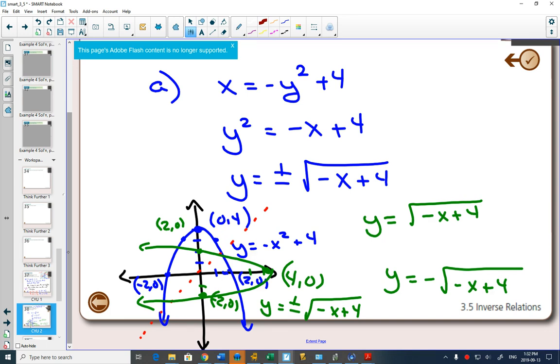If you were using your transformations with the square root, what does the negative do? Horizontal or vertical reflection? It's inside the square root. Anything inside is going to be horizontal. So we've got a horizontal reflection.